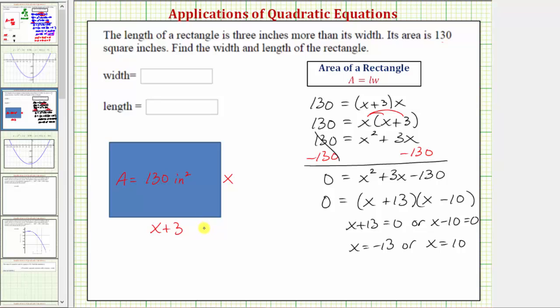Remember, x and x plus three represent a length, which must be positive. So even though x equals negative 13 is an algebraic solution to our equation, it's not a solution to this application problem. So we can eliminate x equals negative 13, and our solution is x equals 10.